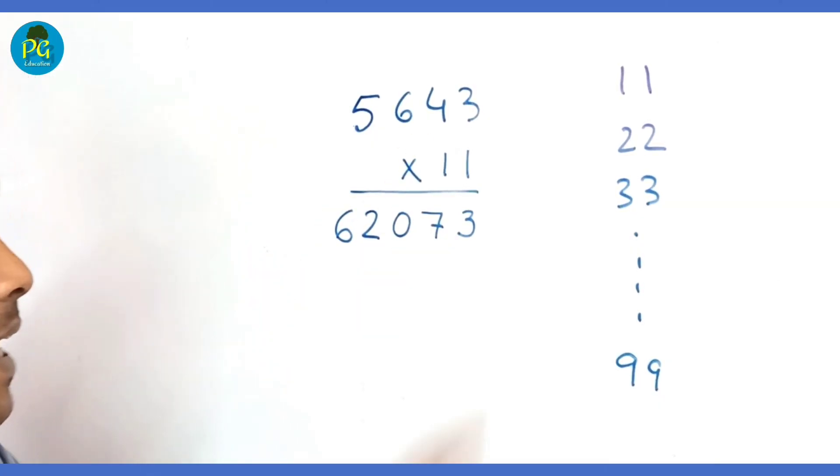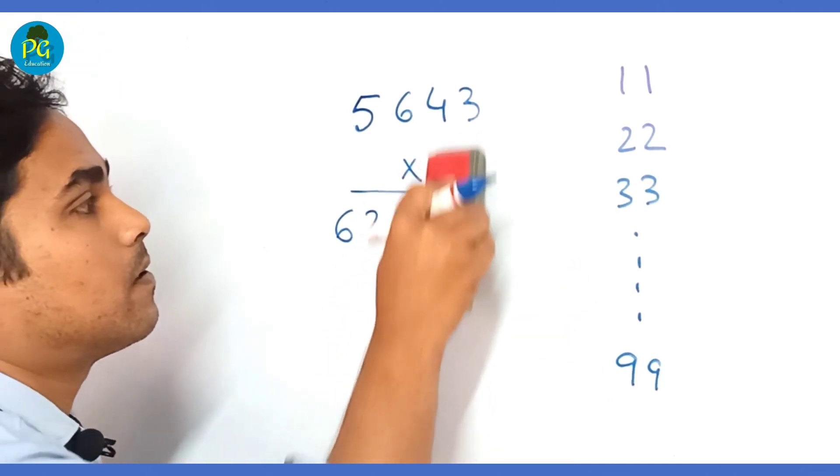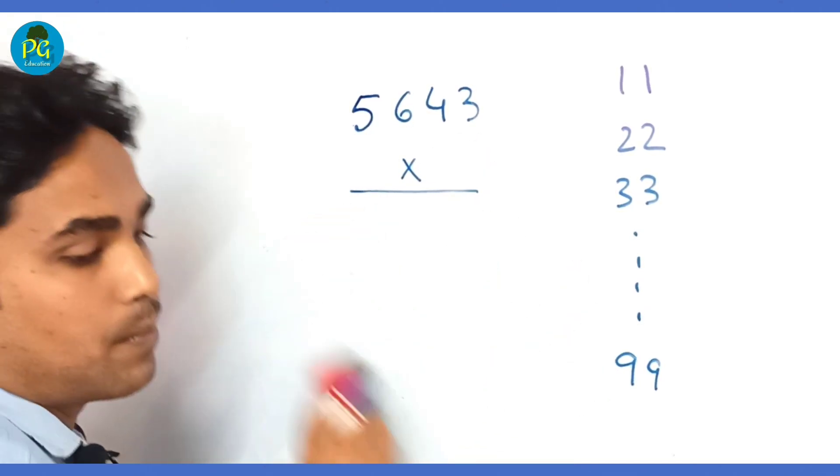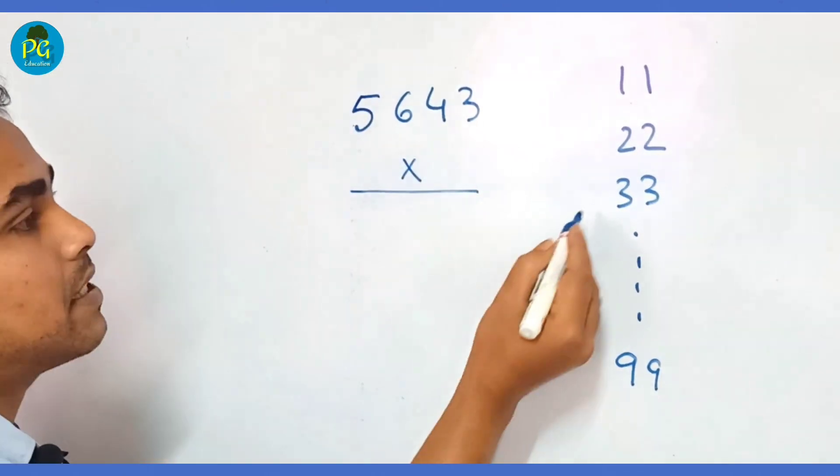So first, 3 times 3 is 9. Then 4 plus 3 is 7, 7 times 3 is 21, 1, 2 in hand.